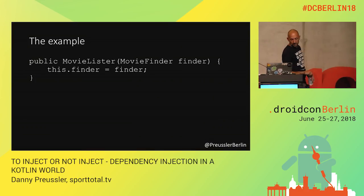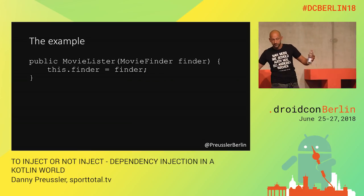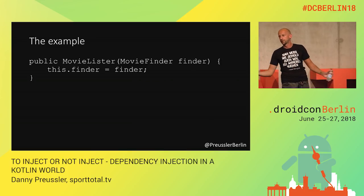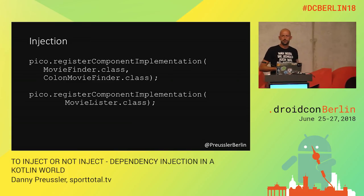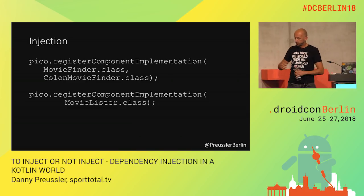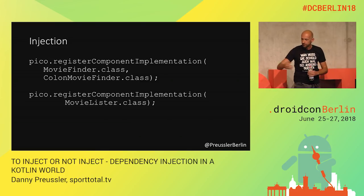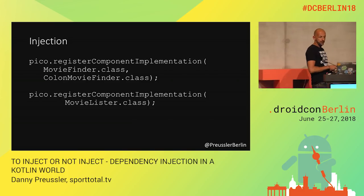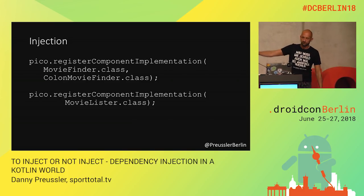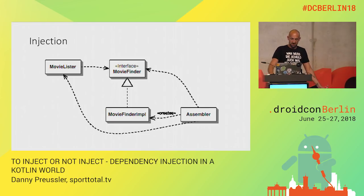Here's his example. There's a MovieLister class that needs a MovieFinder — that's the full example. With dependency injection, using Pico or manually: you register implementations — MovieFinder has an implementation called ColonMovieFinder, and MovieLister you can use directly. Then you just ask the framework and it creates the one you need with constructor injection. That's all you need to know about dependency injection. The MovieLister just knows the interface, and there's one class — the assembler — that creates the one.